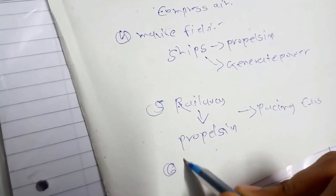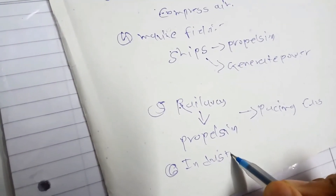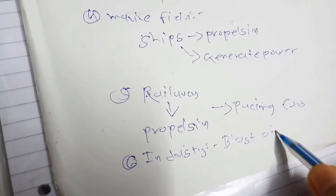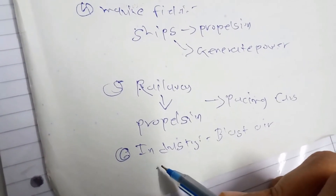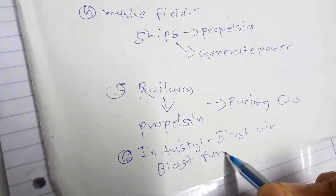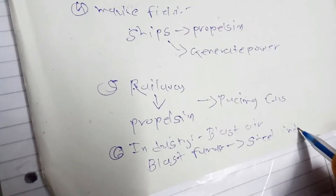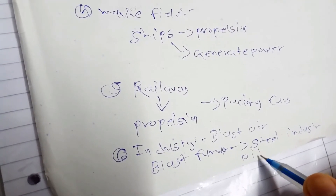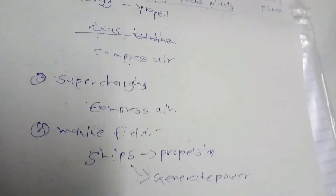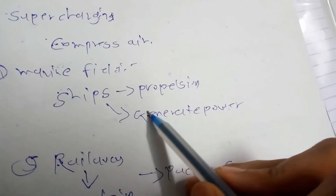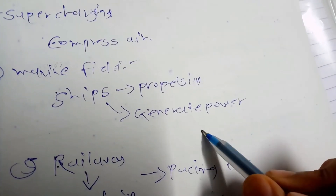The last application is in industry. Gas turbines are used in blast furnaces in the steel industry and in the oil industry. Some industries also require hot gases, and since gas turbines generate hot gases, they are used to supply those hot gases for industrial processes.